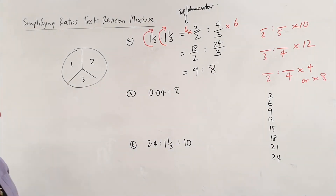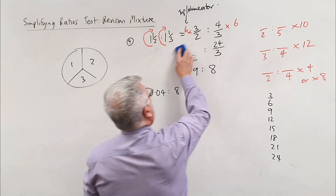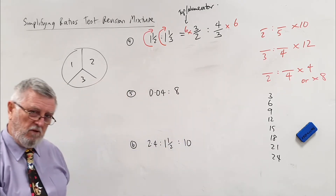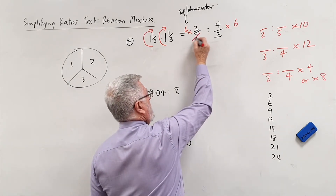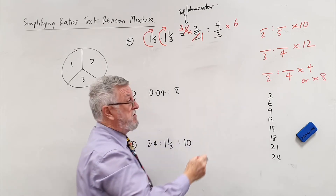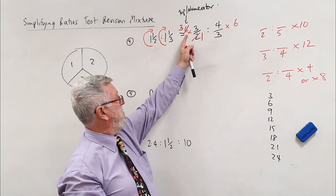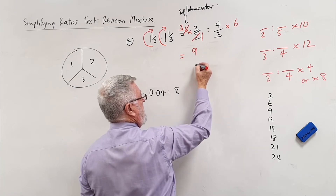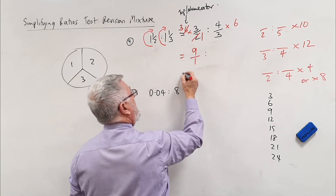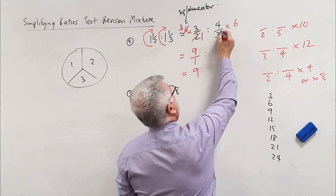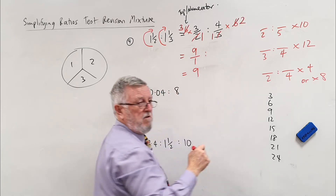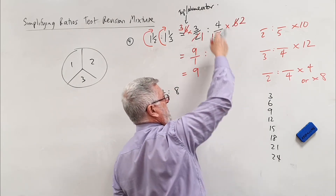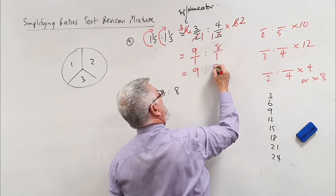For those who want a faster method, there's cross-cancellation. Any top and bottom can cancel when multiplying: 2 into 2 goes once, and 2 into 6 goes 3. What's left is 3 times 3, which is 9 over 1 — just 9. For the other side: 3 into 3 goes once and 3 into 6 goes twice, so 4 times 2 is 8 over 1, just 8. Same answer: 9 to 8.